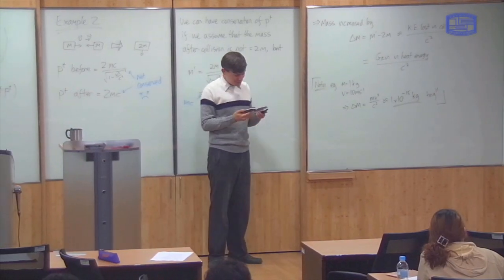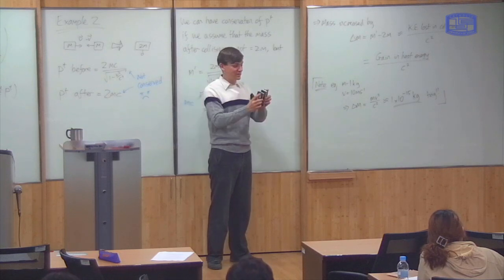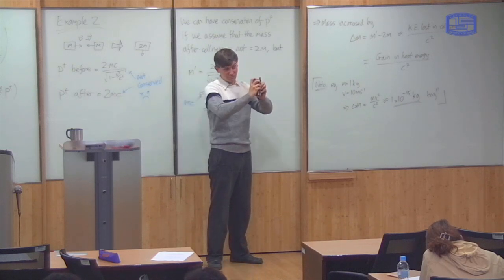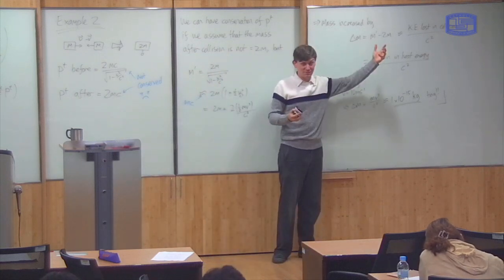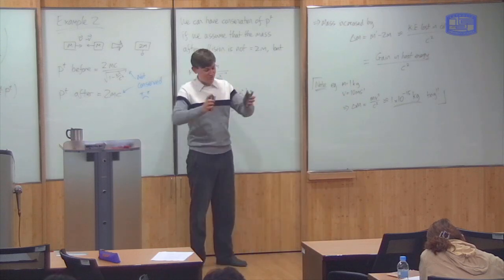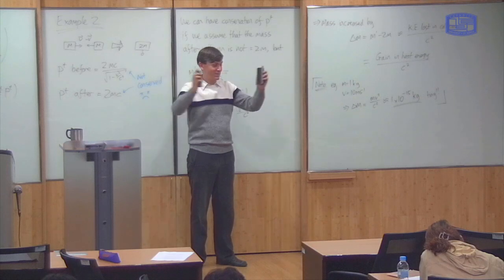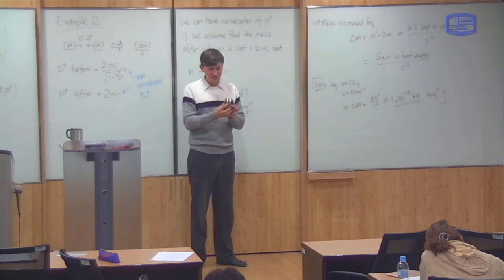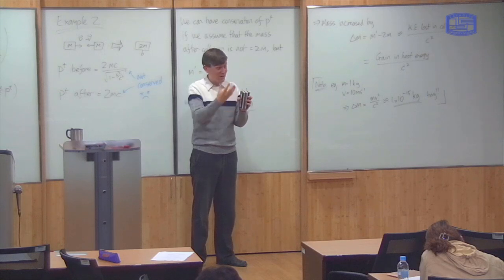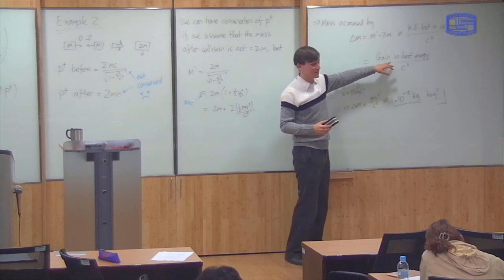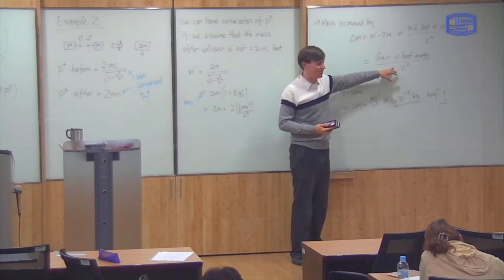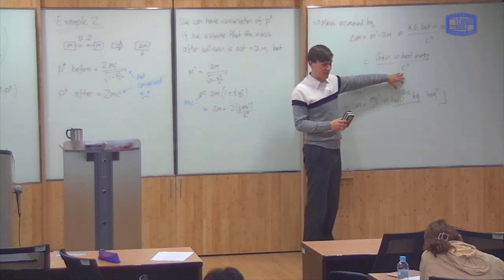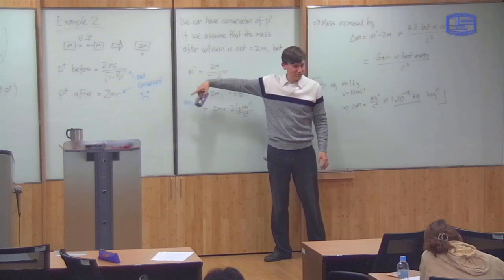A second thing to note is that it doesn't have to be heat energy. I could do the same collision but put some springs on the masses — then when the masses collide, the energy will be stored in the spring, and by the same reasoning, that should also increase the mass. I could use some electrical circuitry with magnets and coils so that when these things collide, I generate an electric current, converting kinetic energy into electrical energy. By the same argument, the mass must increase by the gain in electrical energy. So it's not something special about heat — any form of energy which I give to this mass must increase the mass by this amount, in order to be consistent with conservation of the time component of momentum.